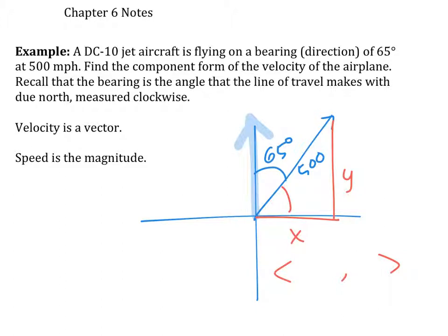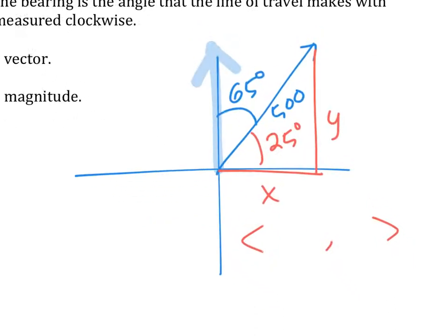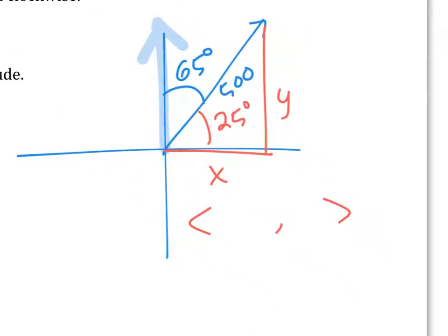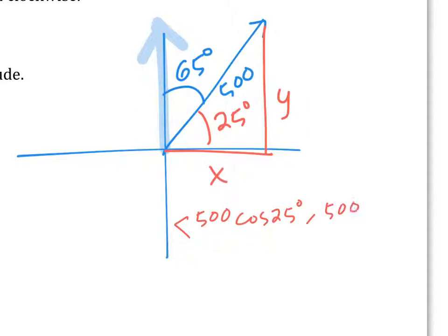Some of you got tricked — this angle is actually 25 degrees. You have to use 25 degrees if you're going to use the component form. So the component form is going to be 500 cosine 25 degrees, 500 sine 25 degrees, which equals approximately 453.15, 211.31.